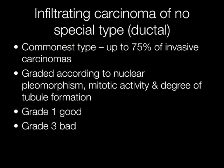Very useful prognostic information can be obtained by grading breast carcinomas of no special type. The grading system works by examining the nuclear pleomorphism — that's the variation in size and shape of nuclei — the mitotic activity and degree of tubule formation. Grade 1 tumours are well differentiated and have a good prognosis, whereas Grade 3 tumours are poorly differentiated with a worse prognosis.